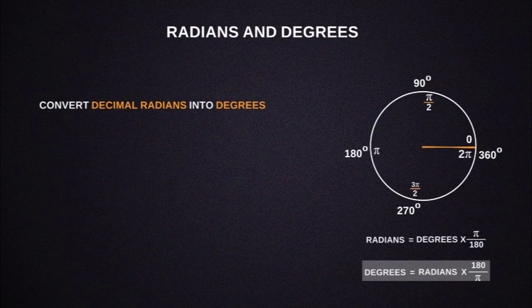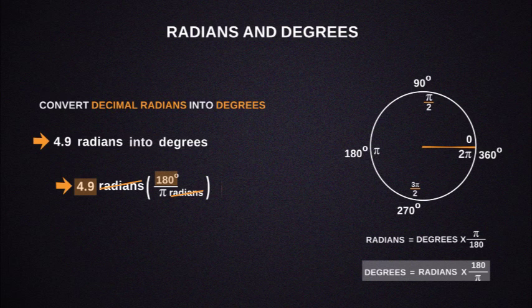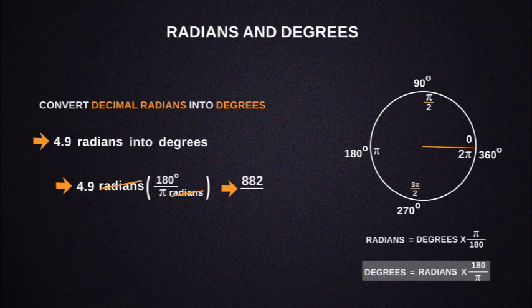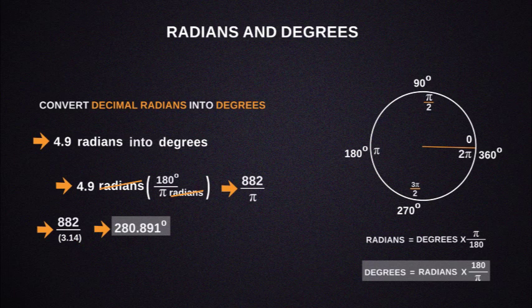Next, here is 4.9 radians in decimal form. Let's see how to convert it into degrees. The pi units cancel, so we get 4.9 times 180 by pi. Simplifying will give us 882 by pi. Evaluating the equation will give us the value of 280.891 degrees.